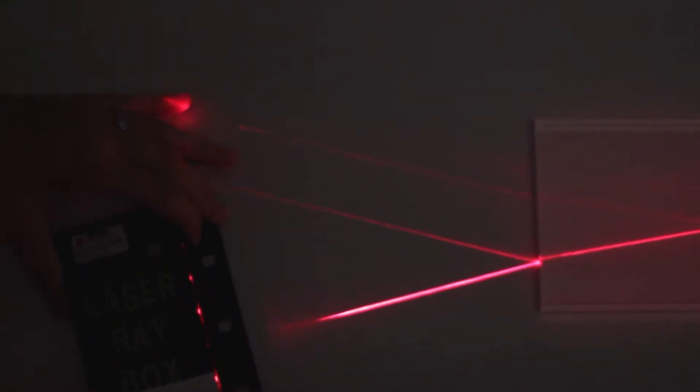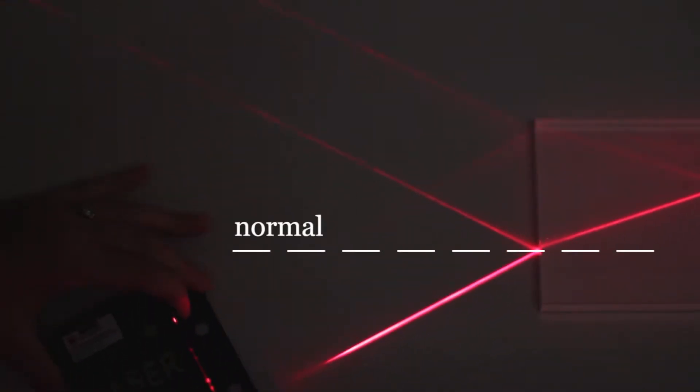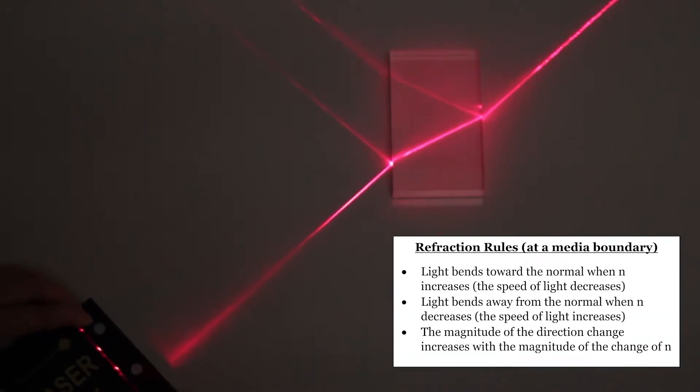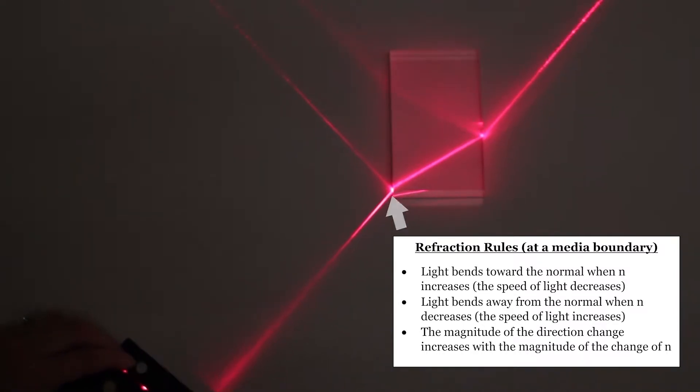Here we can see light traveling into glass. We draw in the normal to the air-glass interface and measure angles with respect to it. Note that light bends toward the normal when moving into a larger n.